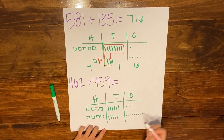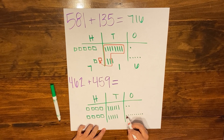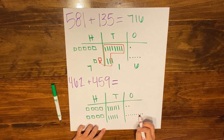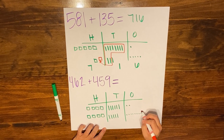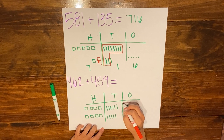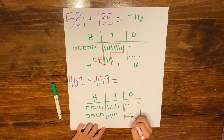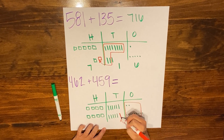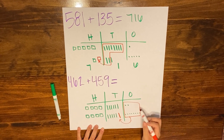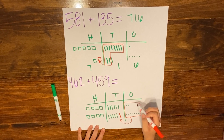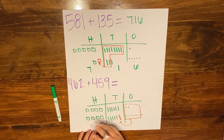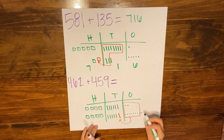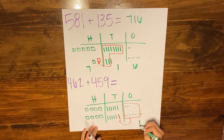I'm going to count out ten ones: 1, 2, 3, 4, 5, 6, 7, 8, 9, 10 — and regroup them as one ten. So I took ten ones and regrouped them as one ten. Now in my ones column, I only have one one left over.